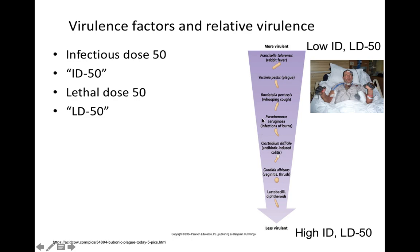Pseudomonas aeruginosa can cause really serious lung infections in cystic fibrosis patients. It's great at forming biofilms. Furthermore, it's a gram-negative bacterium whose outer membrane prevents passage of many antibiotics. In Kirby-Bauer antibiotic sensitivity testing, you can see how incredibly resistant Pseudomonas aeruginosa is to most antibiotics — that's protection provided by the outer membrane. Very few antibiotics can cross through the outer membrane of Pseudomonas aeruginosa.